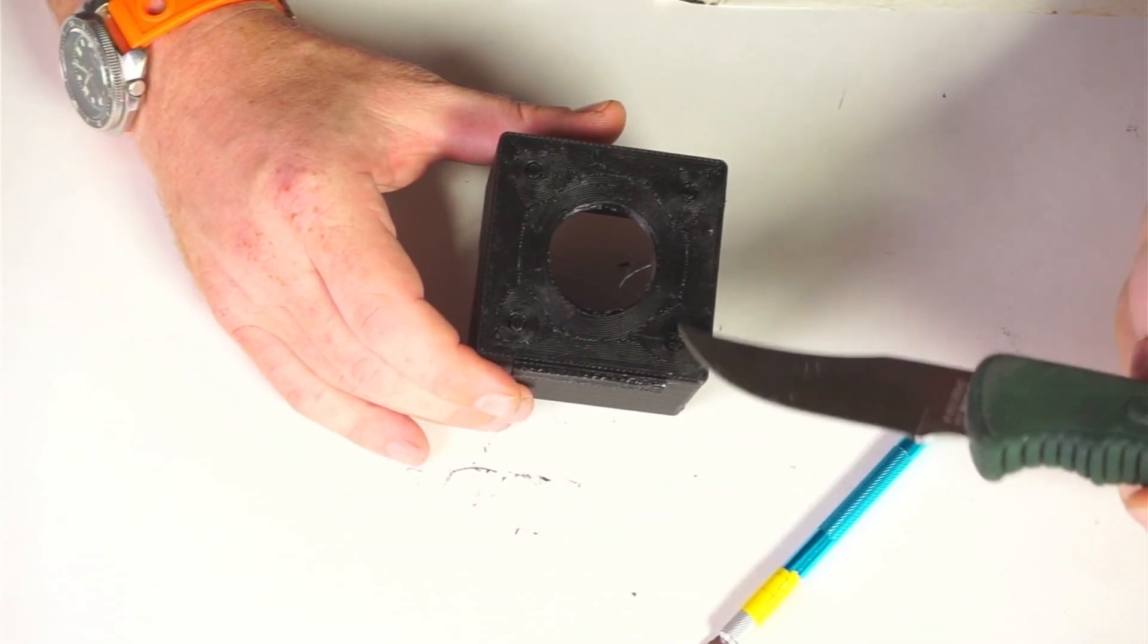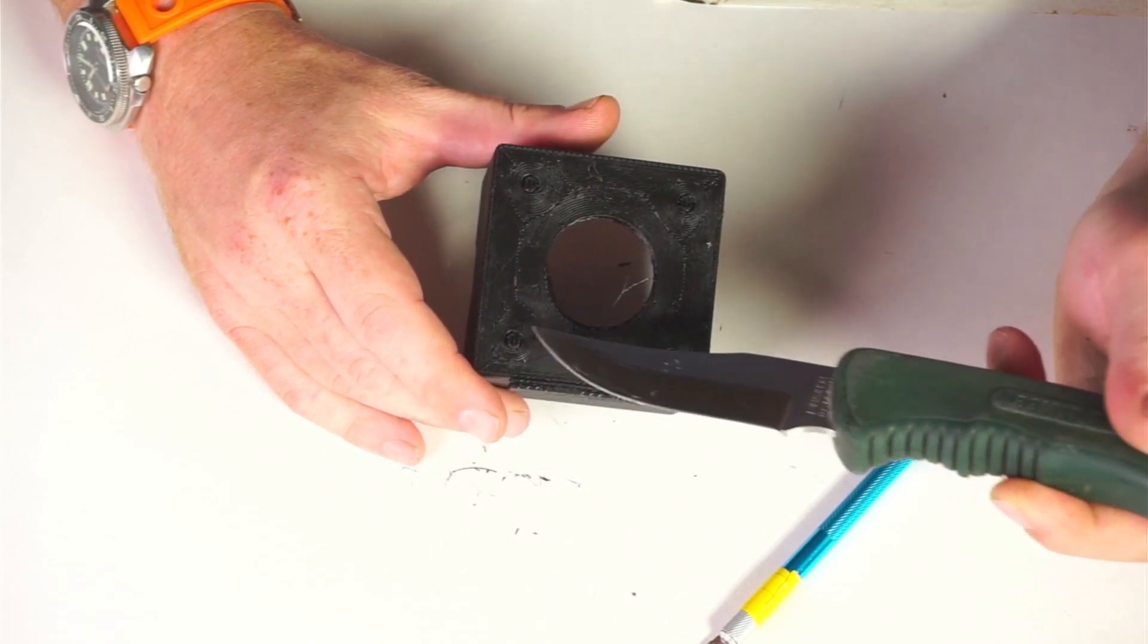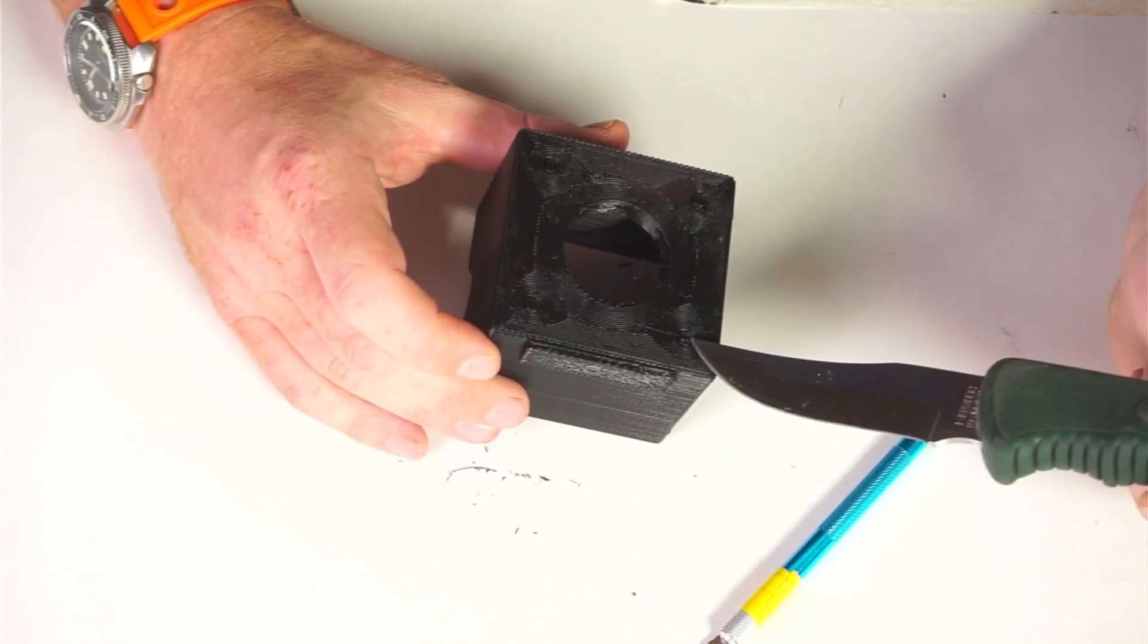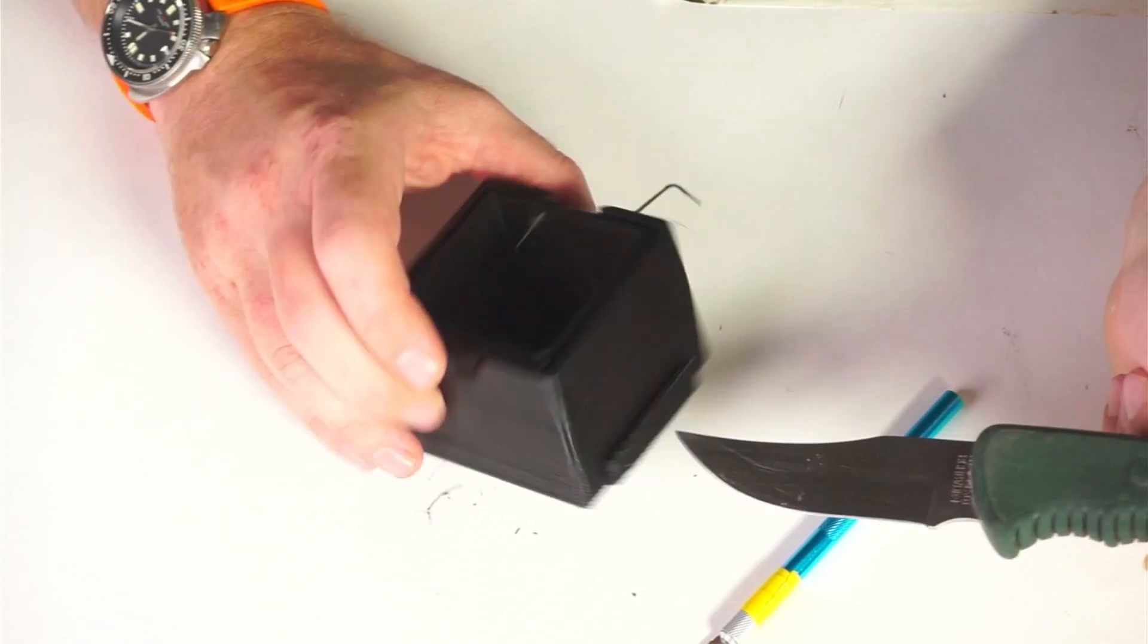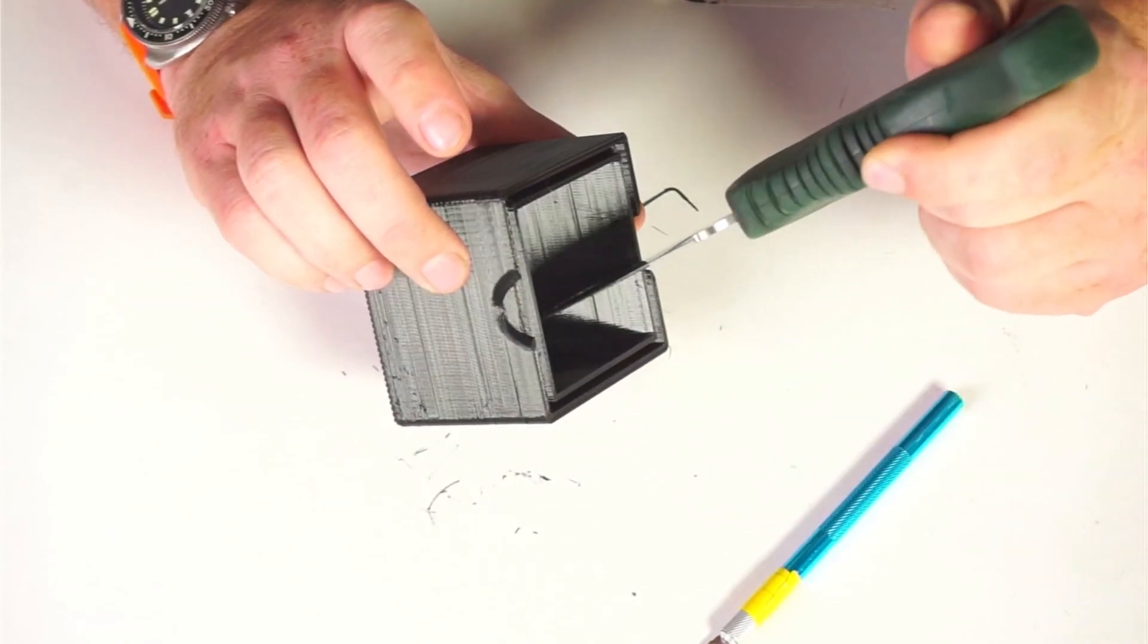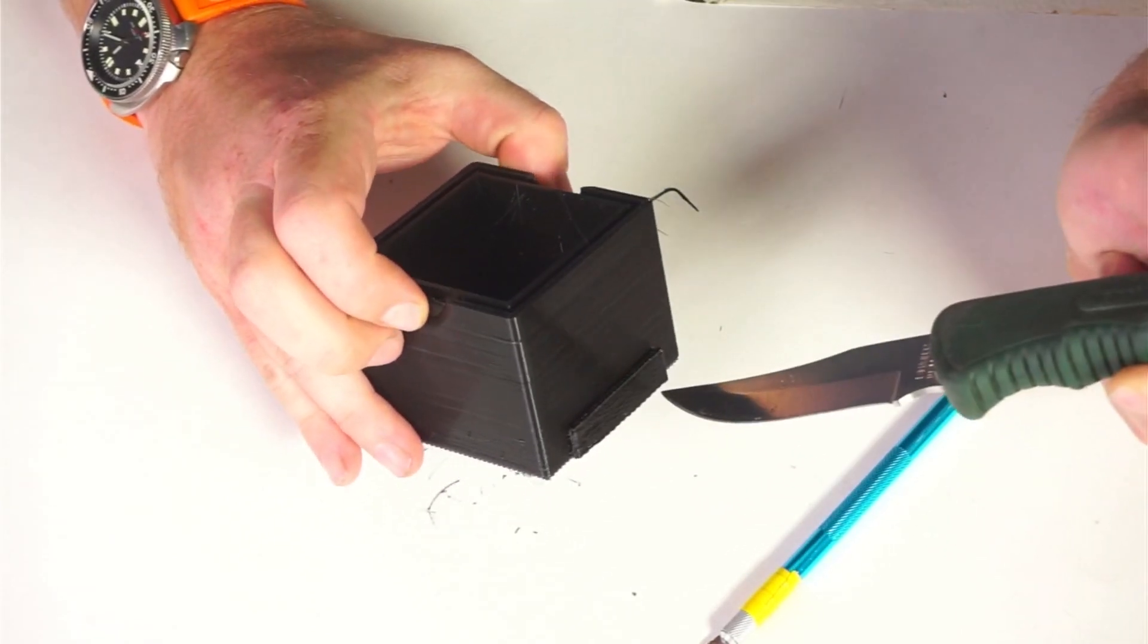There's some support in each one of these holes. You don't have to print support in there. I sometimes do. They need to be popped out. And then there's support here in the slit for the dark slide, and that needs to be popped out.